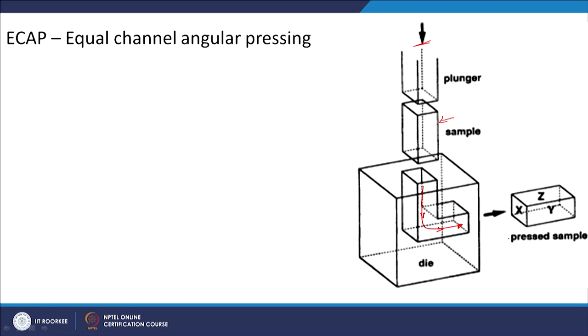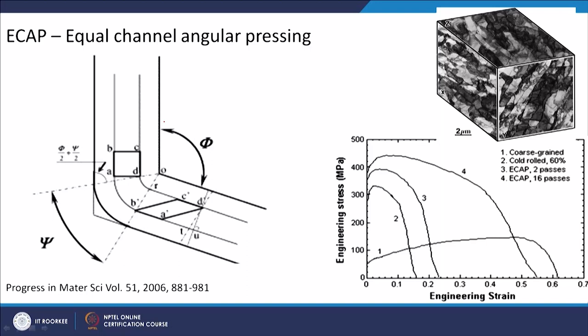Because of the change in angle or direction of movement of the sample, you have imposed a large amount of shear strain in the material, and that is how you refine or break the dendritic structure — all without changing the size of the material. In conventional processes you have a limit on how much strain you can impose because the thickness keeps reducing, but here there is no reduction in thickness. You can see different angles shown in the die design — angle phi here and angle phi there — and depending on these angles, the amount of strain imposed will change.